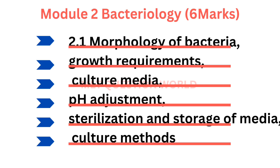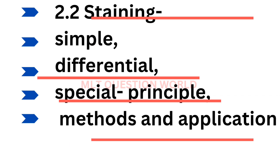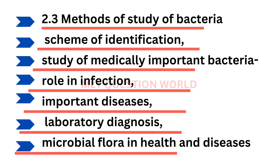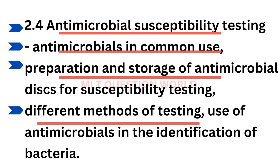Module 2 is bacteriology, which carries 6 marks — morphology of bacteria, their growth requirements, culture media, pH adjustments, sterilization and other culture methods. Then staining: simple staining, differential staining, special staining — their principles, methods, and applications. Then methods of study of bacteria, scheme of identification, study of medically important bacteria, role of infection, important diseases, and lab diagnosis. Then antimicrobial susceptibility testing — different methods, preparation and storage of antimicrobial disks.